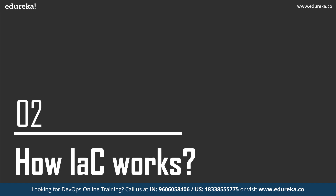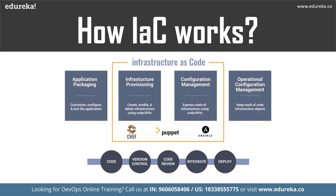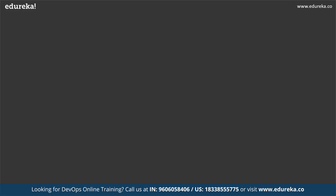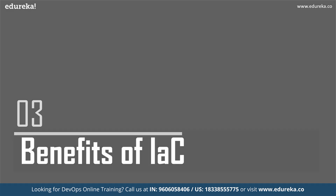IAC tools can vary in the specifics of how they work, but we can generally divide them into two main types: those that follow the imperative approach and those that follow the declarative approach. The imperative approach gives orders — it defines a sequence of commands or instructions so the infrastructure can reach the final result. The declarative approach, on the other hand, declares the desired outcome instead of explicitly outlining the sequence of steps needed to reach the final result. You can refer to the diagram on your screen for more reference.